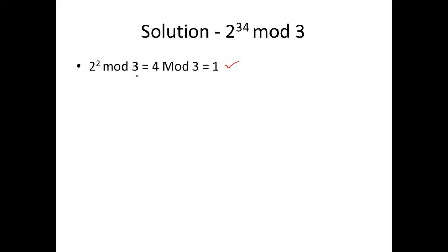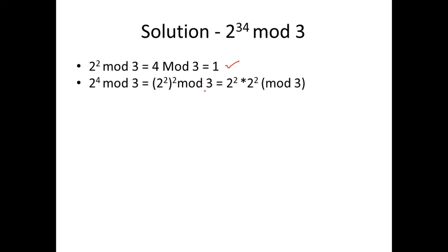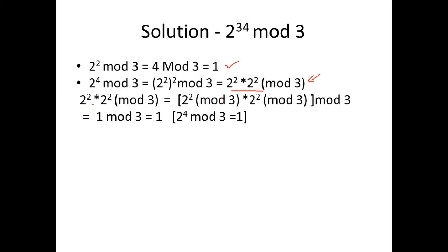Next, compute 2⁴ mod 3. We write it as (2²)² mod 3 = (2² × 2²) mod 3. Applying the multiplication property: (2² mod 3) × (2² mod 3) mod 3. We know 2² mod 3 = 1, so this is 1 × 1 mod 3 = 1 mod 3 = 1. Therefore, 2⁴ mod 3 = 1.